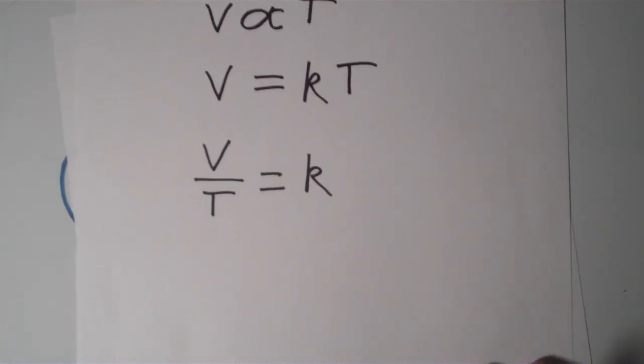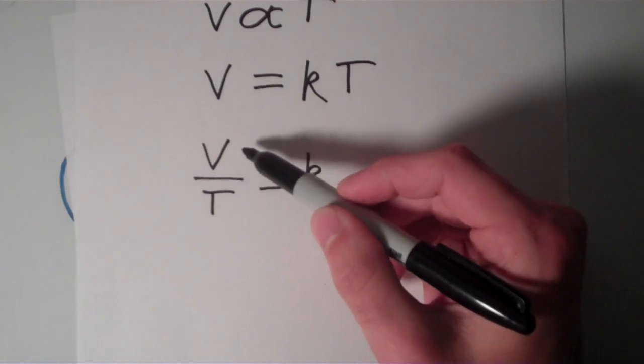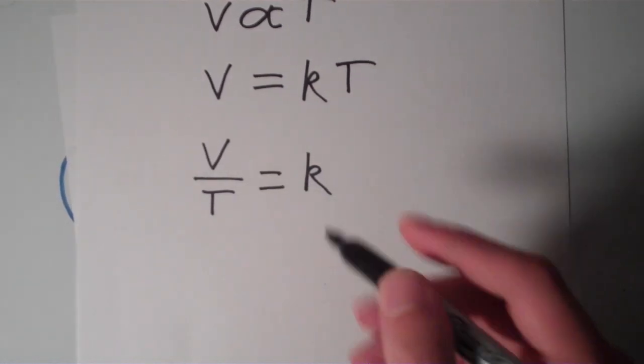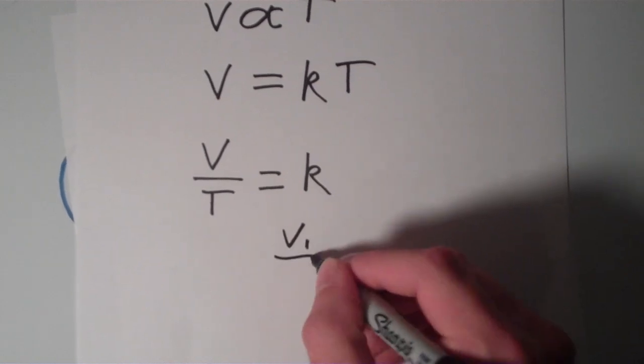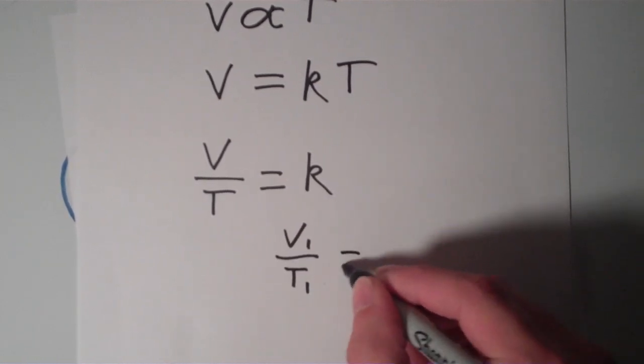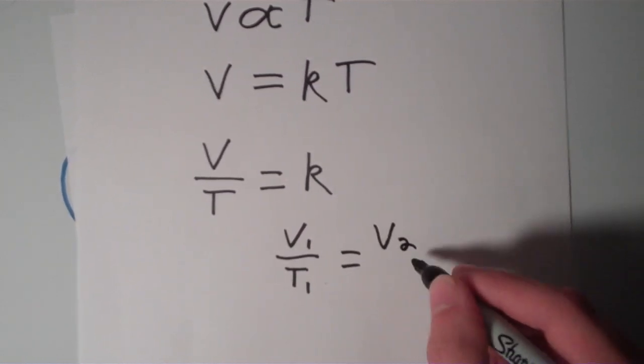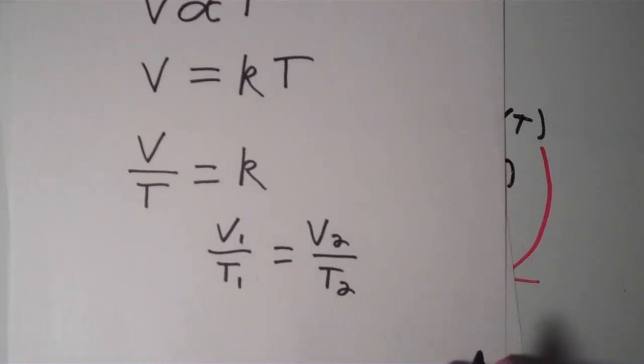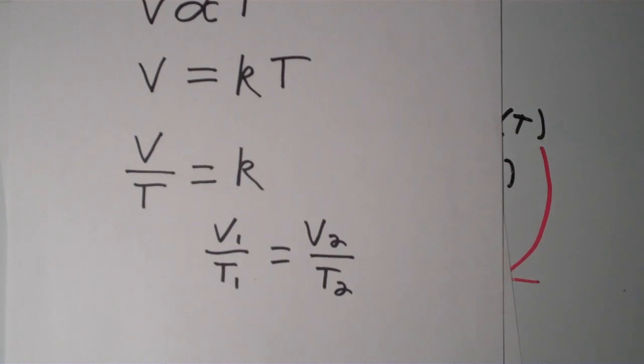So V over T is a constant. So that means if I have two different conditions where I have two different volumes and two different temperatures of the same gas, then the quotient of the volume and the temperature is always going to be the same constant. So in other words, V1 over T1 equals V2 over T2, which is just equal to the same constant. So let's go through a problem dealing with Charles's Law.